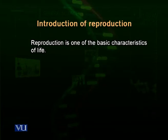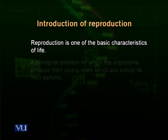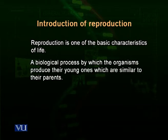We call any organism — anything living — if it acquires energy from the environment, reproduces, and changes itself according to the environment. So reproduction is a property, a characteristic of living organisms. What is reproduction? This is a biological process by which organisms produce their offsprings, their young ones, which are similar to their parents.